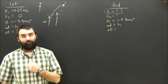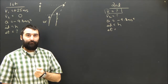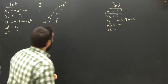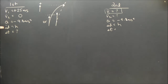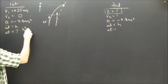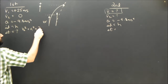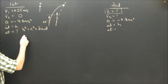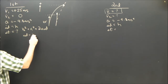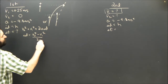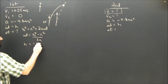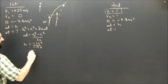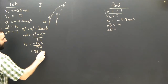If that makes sense, go ahead and try to finish the problem now and pause the video. Using Big Five equation 5 — V2 squared equals V1 squared plus 2A·ΔD — rearranging gives ΔD equals V2 squared minus V1 squared over 2A. Substituting in: H equals negative 25 squared over negative 19.6, which works out to be 31.9 meters.